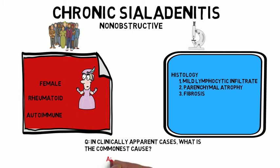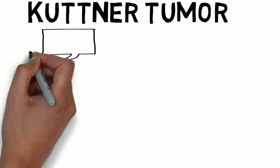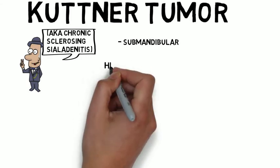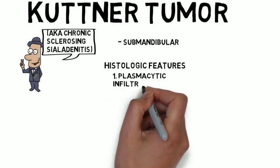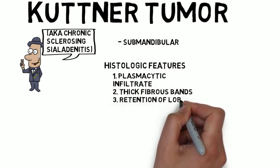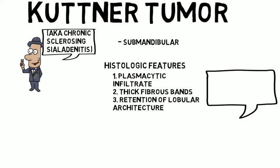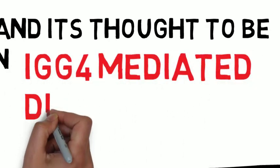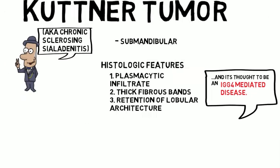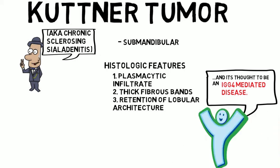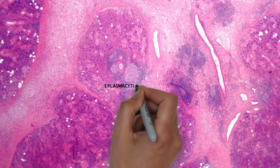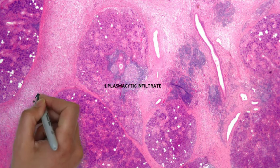Now let's talk about the Kuttner tumor, also known as chronic sclerosing sialadenitis. These happen in the submandibular gland and feature a plasmacytic infiltrate with thick fibrous bands, but with retention of the lobular architecture. These are thought to be IgG4-mediated diseases — a fascinating and currently active research topic. On photomicrograph, we see a plasmacytic infiltrate, thick fibrous bands, and retention of the lobular architecture, which the thick fibrous bands highlight both histologically and grossly.